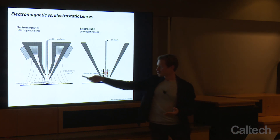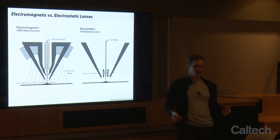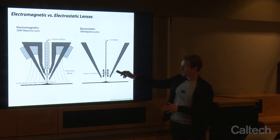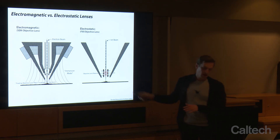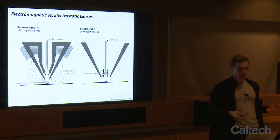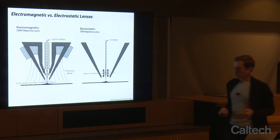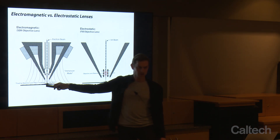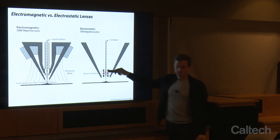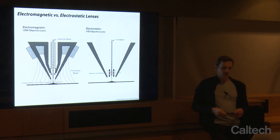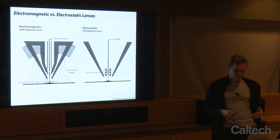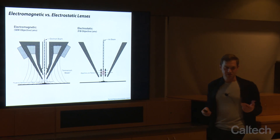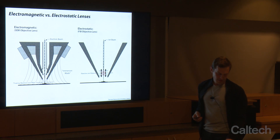We talked about immersion mode in an SEM, which is used for high-resolution imaging. We don't have anything similar to that with the Einzel lens. What I'll talk about next week with helium imaging is how we're able to actually get better resolution than with an immersion lens using just a simple Einzel lens, based on the particulars of what's called the gas field ion source, or GFIS system, on that microscope.